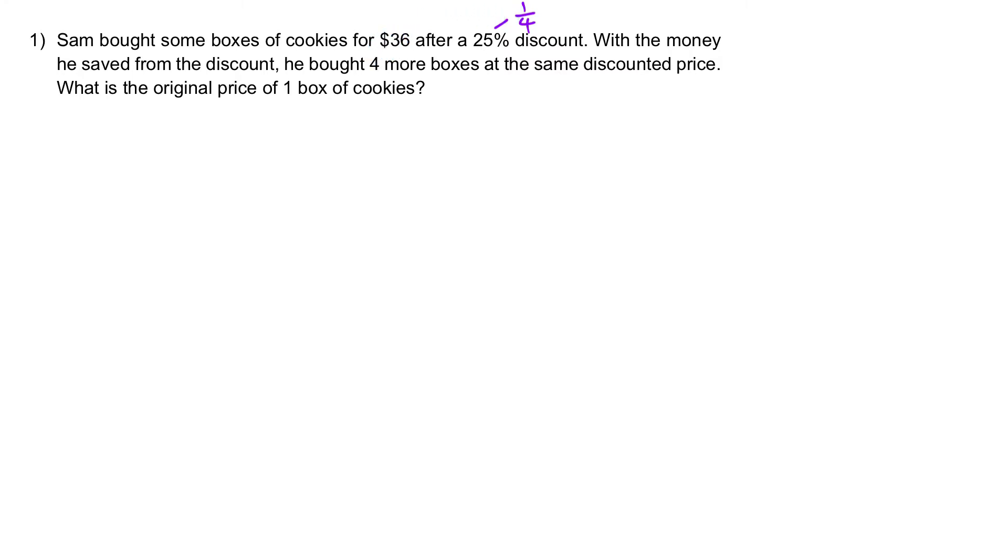So 3 units is this $36. Let's write the step down. 3 units is equal to $36. Now, since the discount is worth 1 unit, let's figure out how much that is worth. To find out what is 1 unit, which is the discount, we shall have $36 divided by 3 and we will get $12. So the discount is actually worth $12.